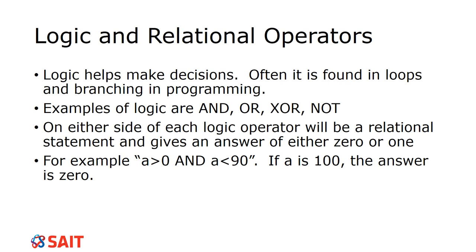Now logic operators get a little more complicated. Logic operators help make decisions — the result is still a 0 or 1, but we can use them for things like loops or branching. A few examples are AND, OR, XOR, and NOT. Generally you'll have a relational operator on one side of the logic operator and another relational operator on the other side. For example: 'a greater than 0 AND a less than 90' — if a is 100, it is greater than 0 but not less than 90, so with AND the answer is 0.